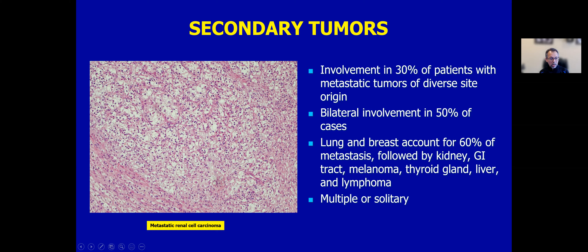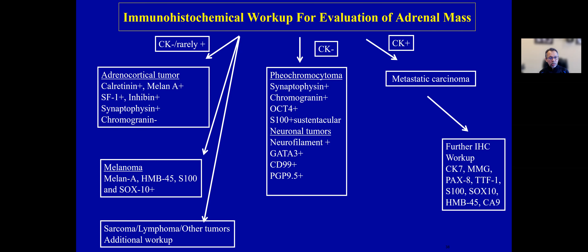A few words about secondary tumors: adrenal gland is highly vascular, making it a frequent site of metastasis — involved in 30% of patients with metastatic tumors of diverse site origin, and frequently bilateral. Lung and breast account for 60% of metastases, followed by kidney, GI tract, melanoma, thyroid gland, liver, and lymphoma. They can be multiple or solitary, so always keep metastasis in your differential diagnosis and work up thoroughly.